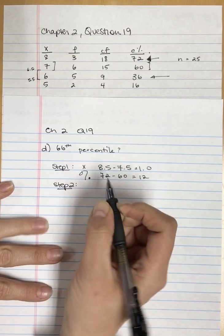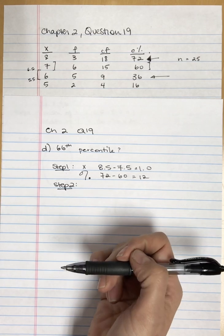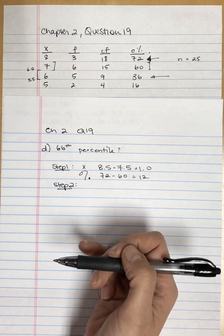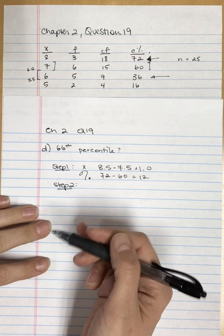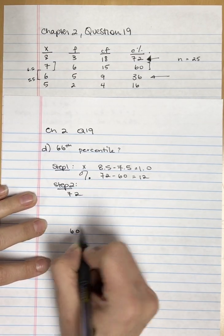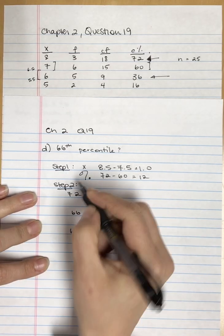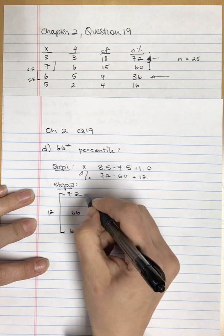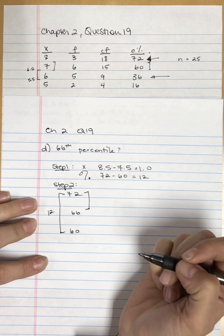Step two, I need to find how far into the category in the percentiles—how far down from 72 do I need to go to get 66? The top is 72, the bottom is 60, and I'm trying to figure out where the 66 is. From 72 to 60, that's 12. This part is what I'm asking.